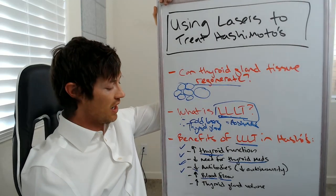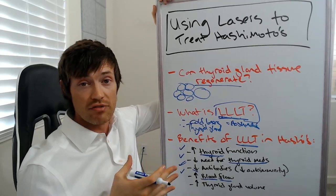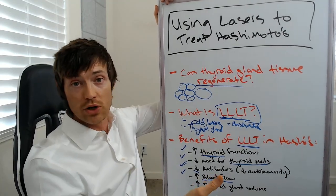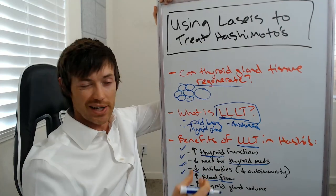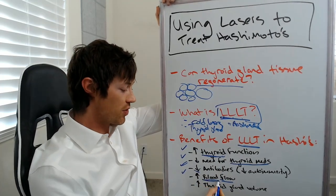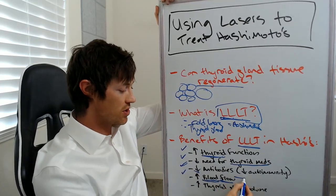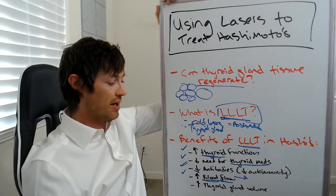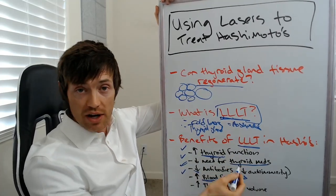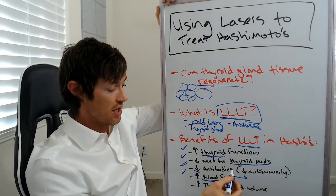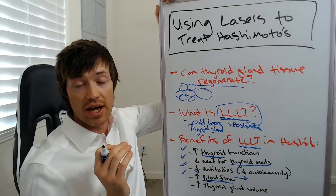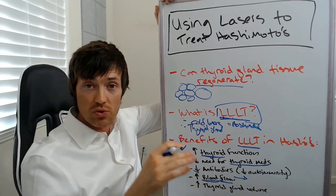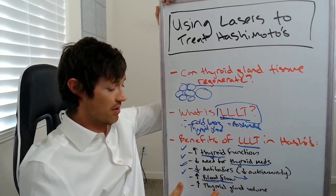So if you can just supply the right blood flow or increase blood flow, you can actually allow the body to heal itself. There's definitely some increased blood flow occurring with LLLT, and this is going to allow thyroid hormones to be circulated better throughout the body. Even if you're not necessarily producing a ton more thyroid hormone as a result of the therapy, just having that increased blood flow and movement of thyroid hormones throughout the body can probably help improve symptoms as well.